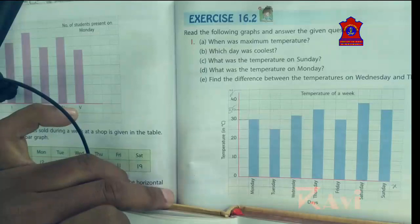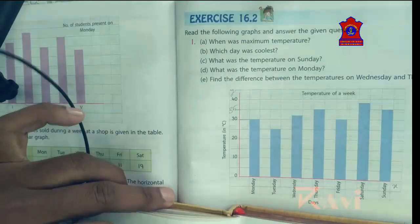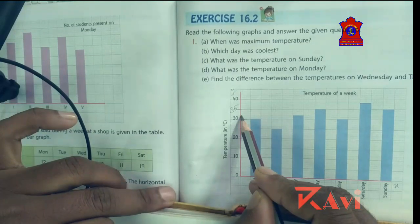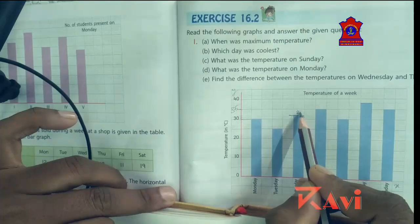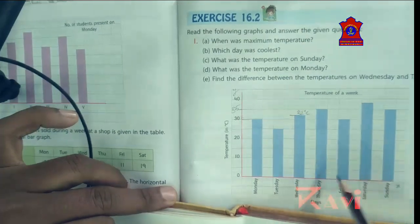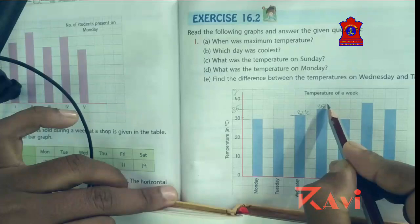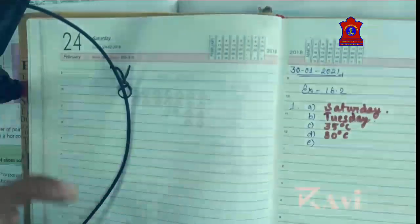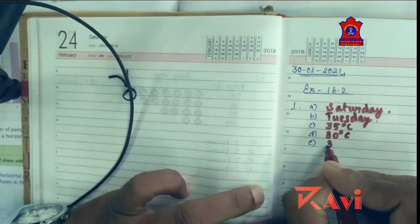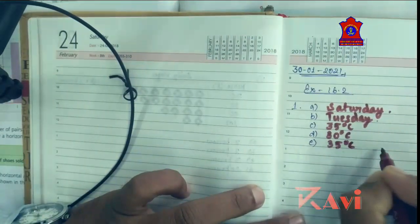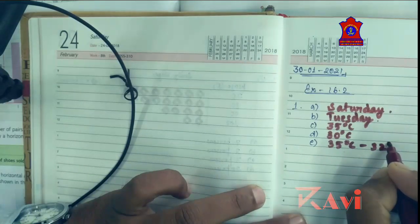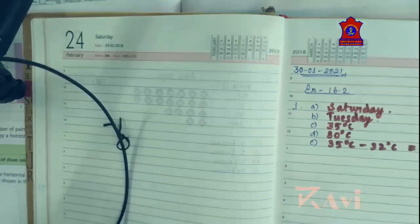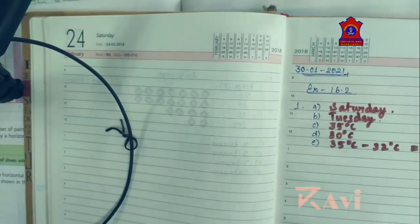Find the difference between the temperature on Wednesday and Thursday. Wednesday's temperature is 32 degrees Celsius and Thursday's temperature is 35 degrees Celsius. The difference: 35 minus 32 equals 3 degrees Celsius. Now let's move to question number two.